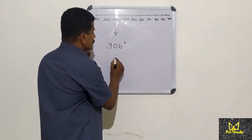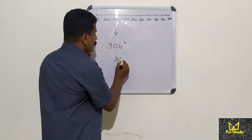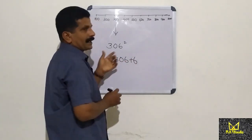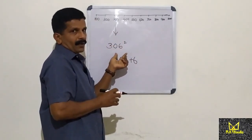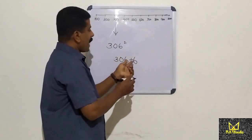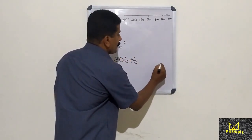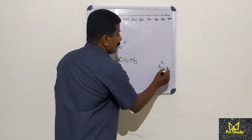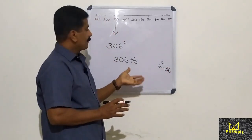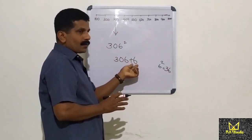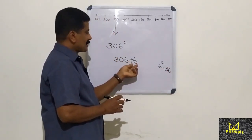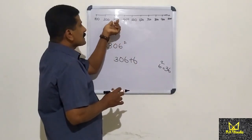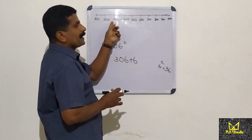We have to say that 300 is 300. It is 300. 6 is 36. After 36 and 6, the answer is, you can get 6.